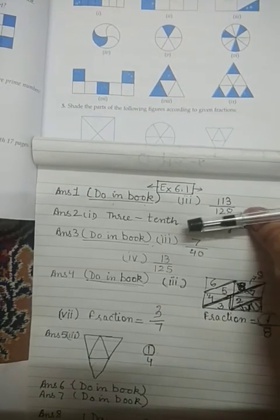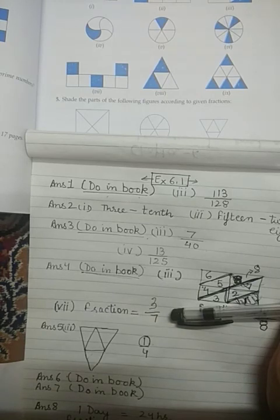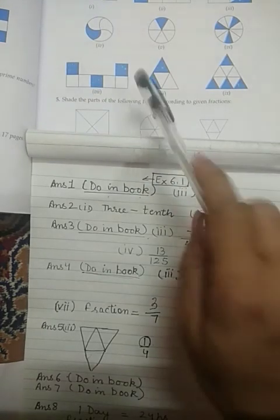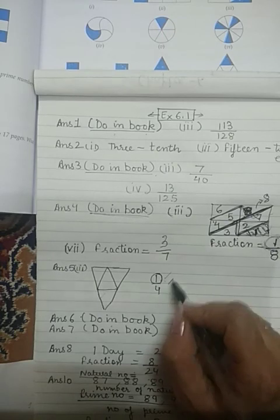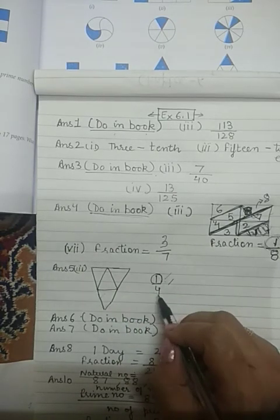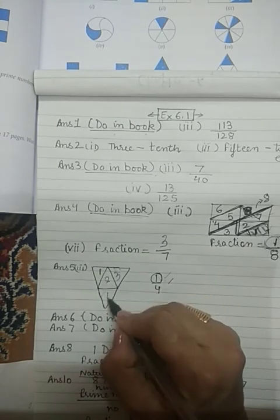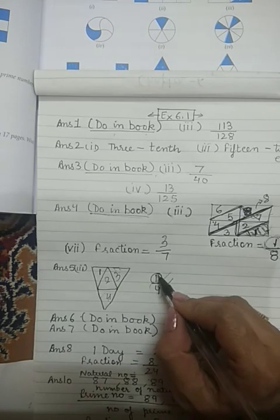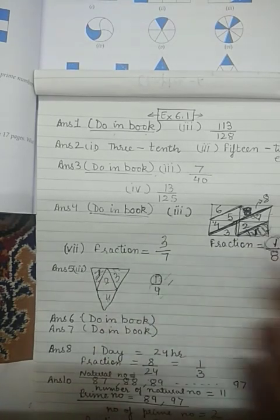Question number 5 is a very interesting question — do it in your copy and use different colors to shade parts, but use one color per shaded area to show uniformity. For example, question 5, third part: the fraction is 1/4. Four in the denominator means total 4 parts. Do we have 4 parts here? Yes — parts 1, 2, 3, 4. Out of 4, how many do we shade? One. So the numerator tells me the shaded portion — I shade one portion. Any one triangle can be shaded.